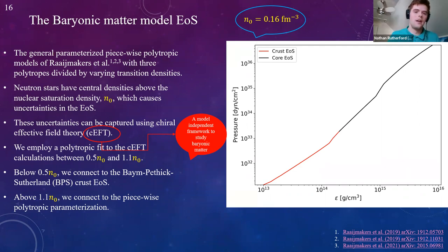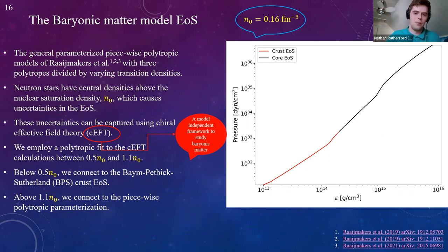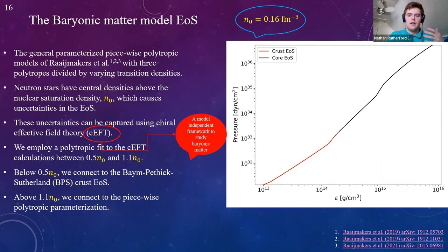On the right I show a plot of the equation of state in the energy density-pressure plane, where the red line represents the crust equation of state and the black line represents the core equation of state. Now that we have our equations of state and the two-fluid TOV equations, we can discuss our inference framework and how we incorporate ADM into the inference method.